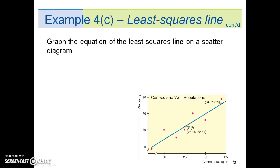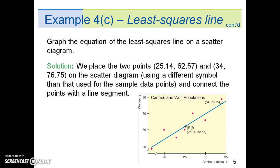Part c is to graph the equation of the least-squared line on a scatter diagram. We place the two points (25.14, 62.57) and (34, 76.75) on the scatter diagram using a different symbol than that used for the sample data points, and connect the points with a line segment.